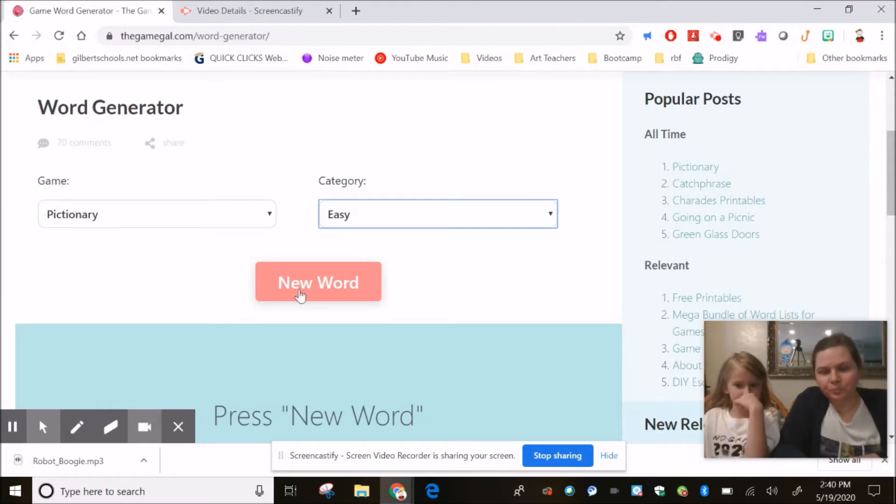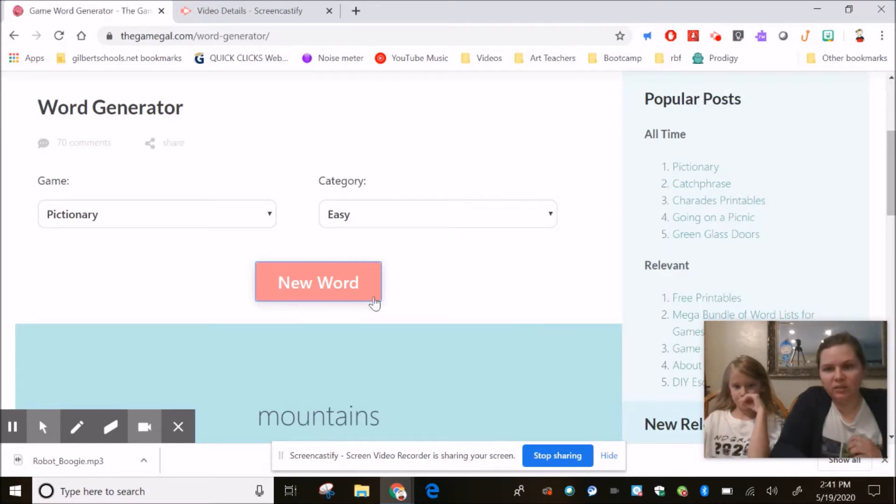So we're going to get a word. I'm going to click new word and it says mountains. Okay, so we'll use this in our little video that we're going to show you right now.